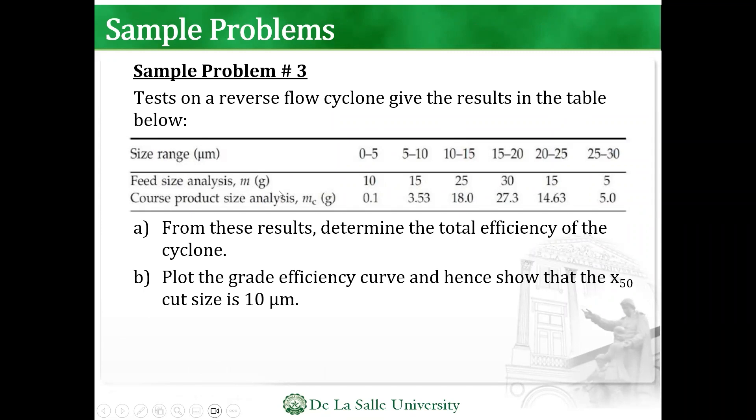You're given the feed size analysis, the masses of the feed, and the coarse product. The coarse should be spelled C-O-A-R-S-E. 0.1, 3.53, and so on. So from these results, determine the total efficiency of your cyclone and plot the grade efficiency.